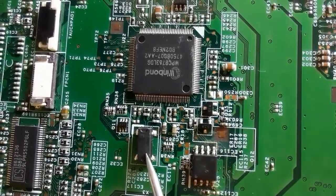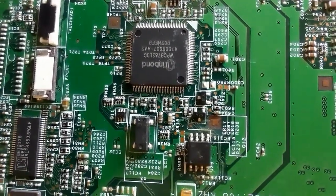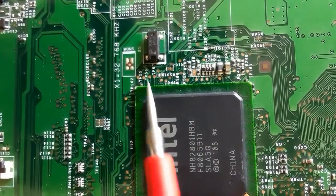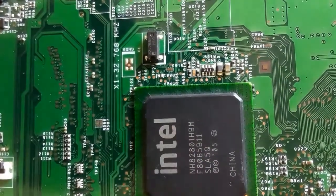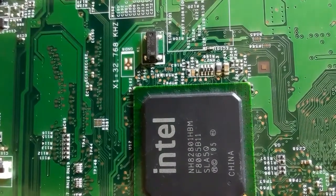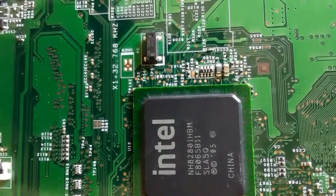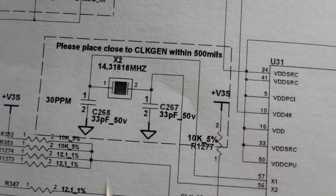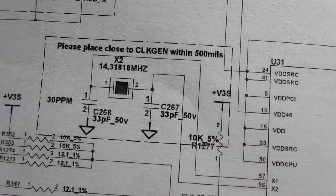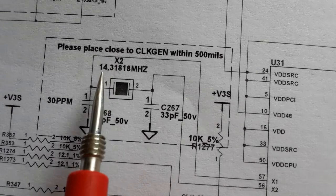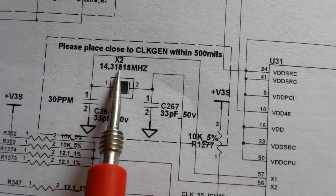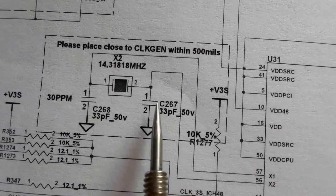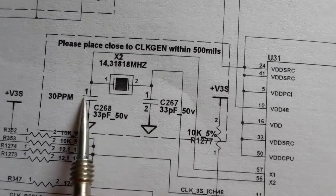Here near the ICH or south bridge we have another crystal. So basically there are many crystals in the motherboard. This is the symbol or the schematic for the crystal — as you can see, it contains two pins. This is X2 at 14.380 megahertz.